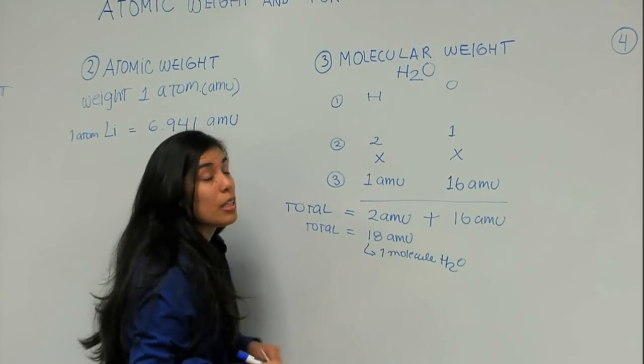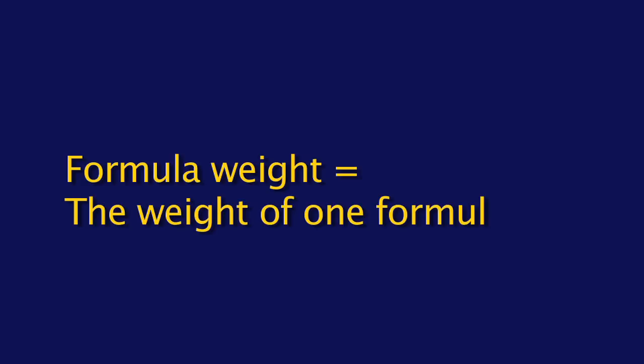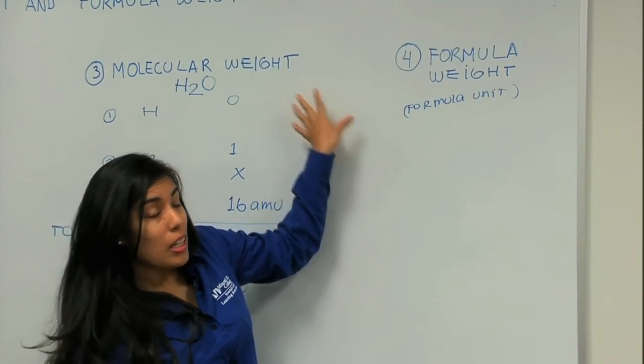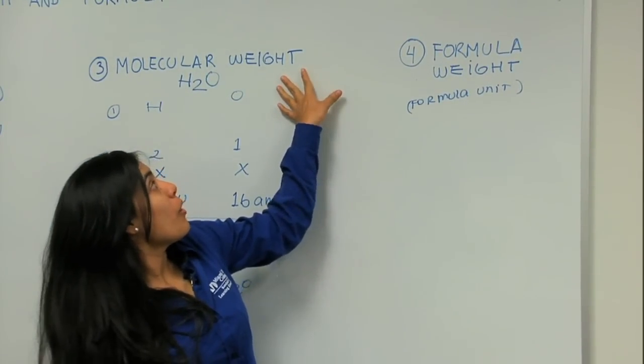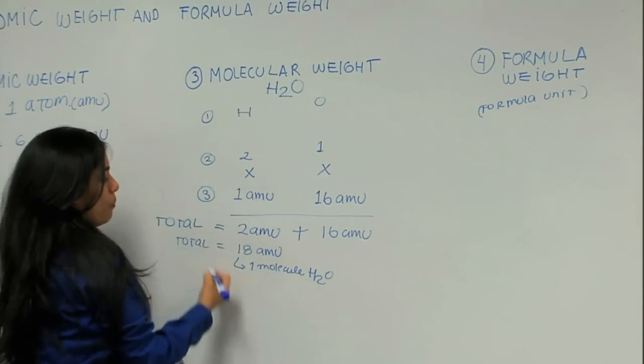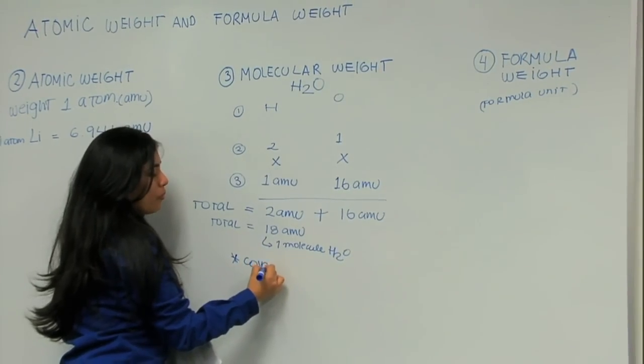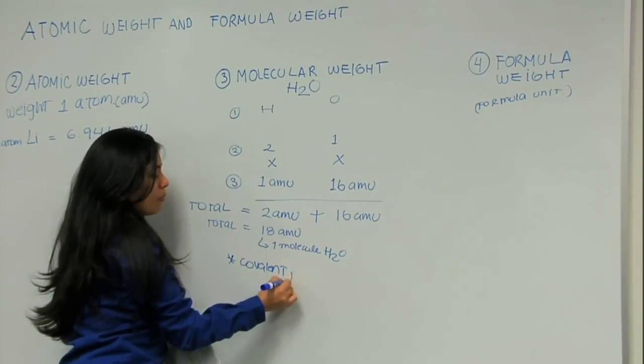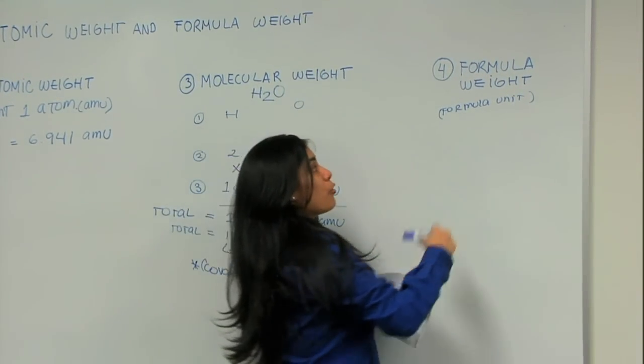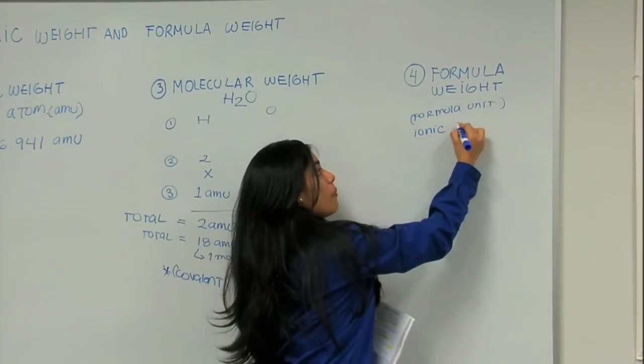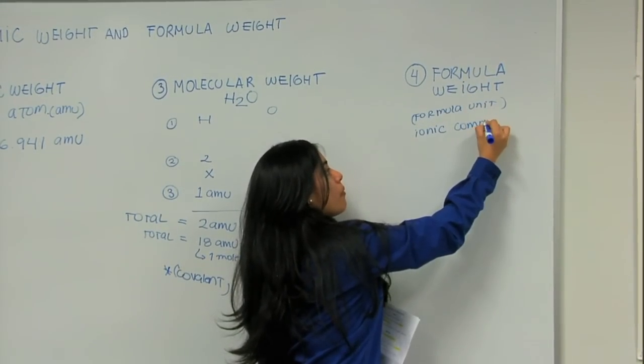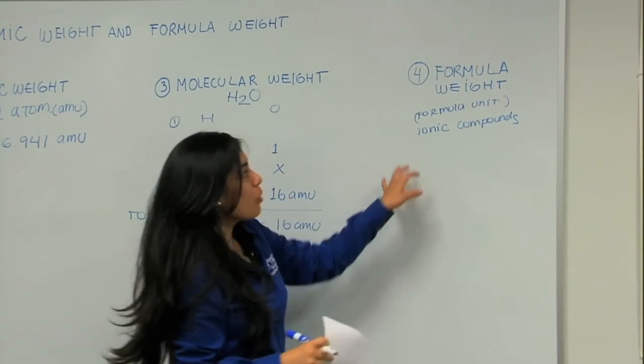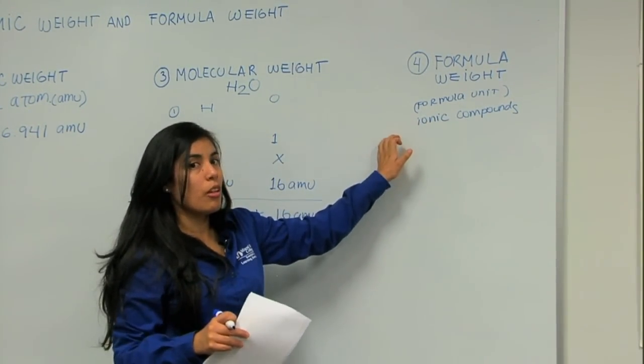Now, finally, formula weight. Formula weight is the weight of one formula unit. And what is one formula unit, you might think? It's very similar to the molecular weight. It's just that the molecular weight refers to covalent compounds, and the formula weight refers to ionic compounds, which are also referred to as formula units in this case.